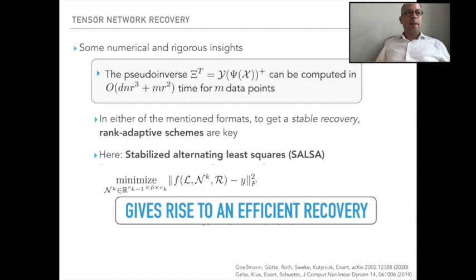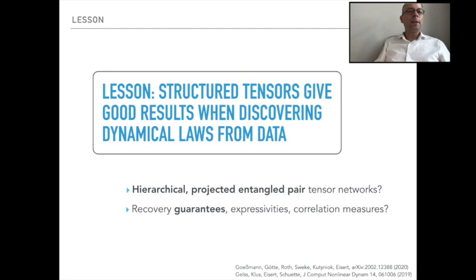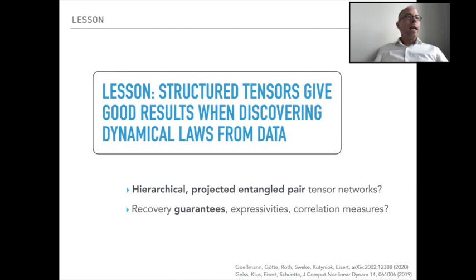As a short example, we looked at the Fermi-Pasta-Ulam-Tsingou problem — nonlinearly coupled springs — with a dictionary of the first four Legendre polynomials per site, uplifted to the full function dictionary using the tensor train format. We showed that at suitable data levels we get either perfect or close-to-perfect recovery of the unknown dynamical laws from data alone. The lesson is that structured tensors, in particular tensor trains, give rise to good results when discovering dynamical laws from data — when learning unknown equations of motion in a machine learning mindset from data alone.